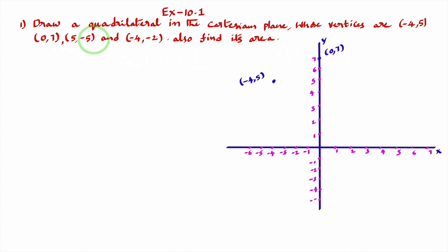Third point, 5 comma minus 5. X is positive, y is negative in fourth quadrant. 5 comma minus 5. This is the point 5 comma minus 5.